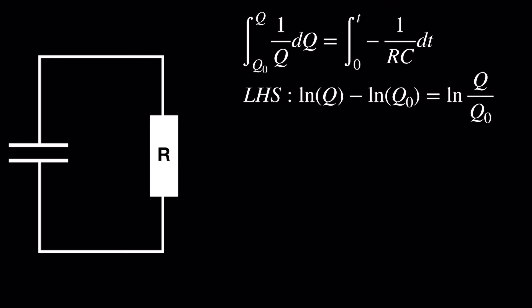The right-hand side is a simple application of the reverse power rule, so we get negative t over RC.